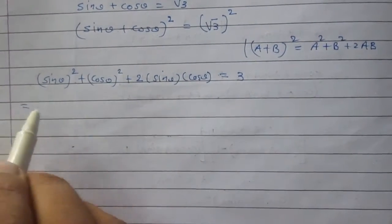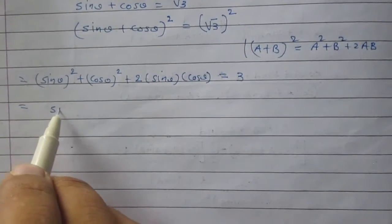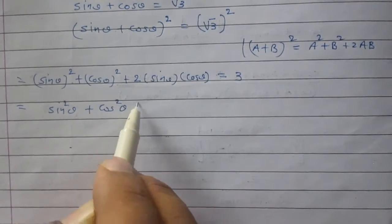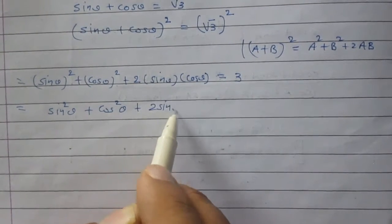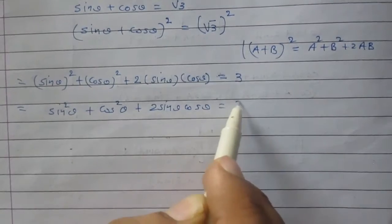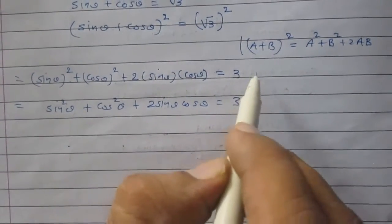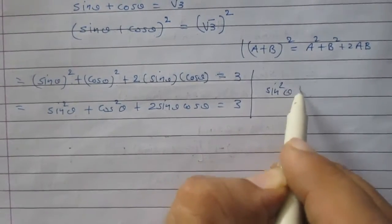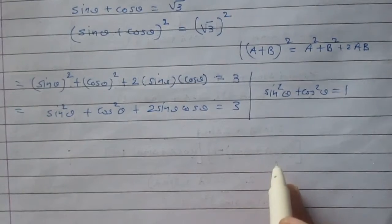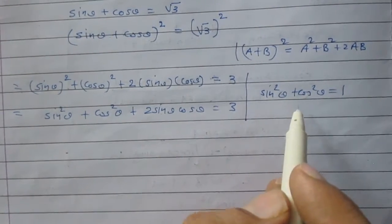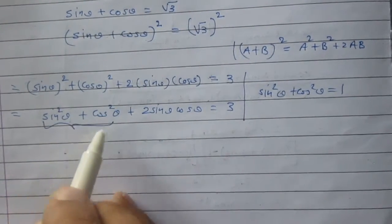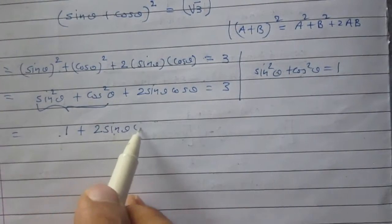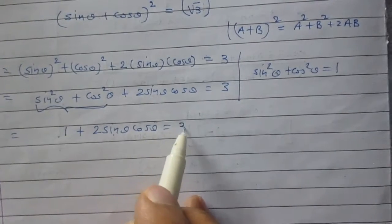Now, the left hand side is sin²theta plus cos²theta plus 2 sin theta cos theta is equal to 3. According to trigonometric identities, sin²theta plus cos²theta is equal to 1. Using this result, we can say that 1 plus 2 sin theta cos theta is equal to 3.